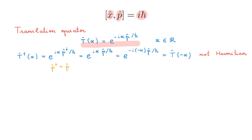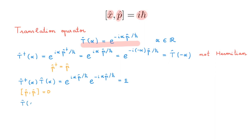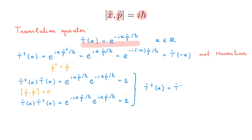Let's look at the action of T†(α) on T(α): e^(iαp/ℏ) · e^(−iαp/ℏ) = identity. We can combine these exponents because the p operator commutes with itself. Similarly, T(α)T†(α) = identity. Putting these together tells us that the adjoint of T(α) equals its inverse, which means the translation operator is unitary.